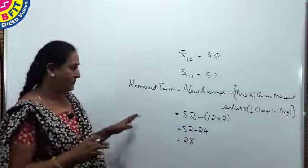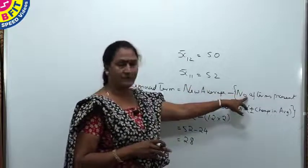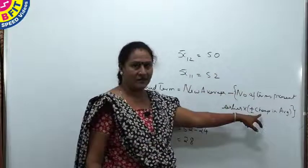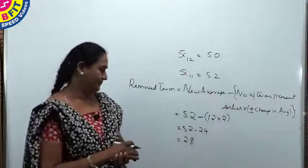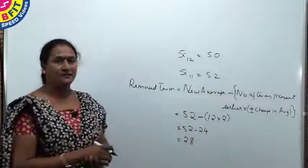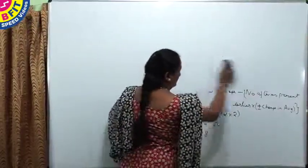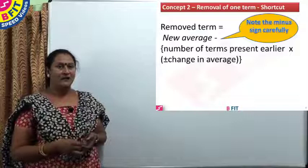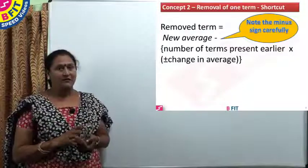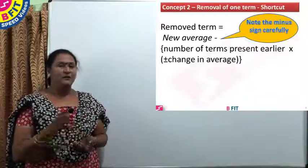We have found the removed term without lengthy working by using this shortcut. New average is 52, number of terms present earlier is 12, change in average is 2. Since the average increased by 2, it is positive, and you subtract because you are removing one term — giving the removed term as 28. To summarize: removed term = new average minus (number of terms present earlier × (plus or minus change in average)).